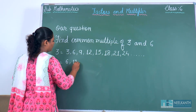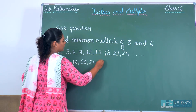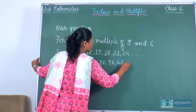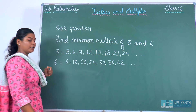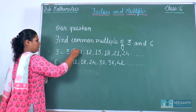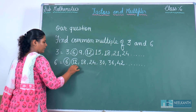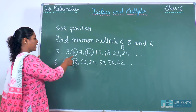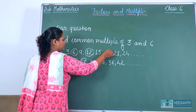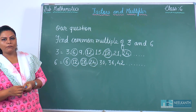And for 6: 6, 12, 18, 24, 30, 36, 42 — these are all multiples of 6. Now we have to check which multiples are the same. Here you can see 6, 12, 18, 24 — these are all the common multiples of 3 and 6.